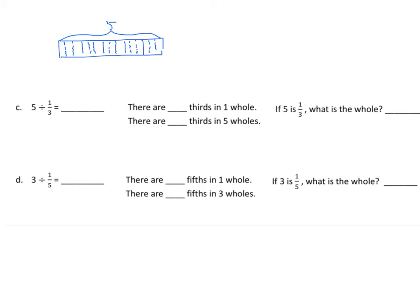Now they want us to draw a number line underneath. I'm going to make thirds my unit because the fraction is one-third, so I start with zero-thirds. When I get to one whole, it's three-thirds. Two would be six-thirds, three would be nine-thirds, then twelve-thirds, and finally five is fifteen-thirds. We look at the numerator to find our answer — there are fifteen-thirds.